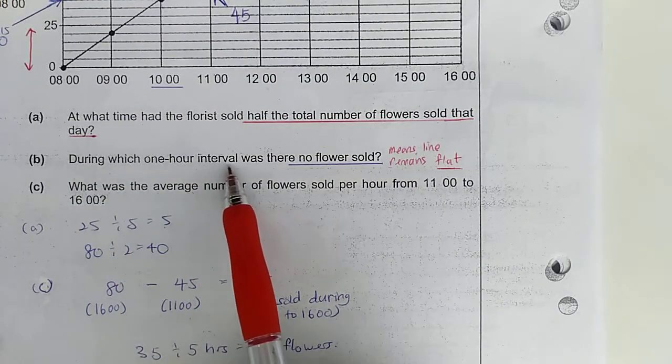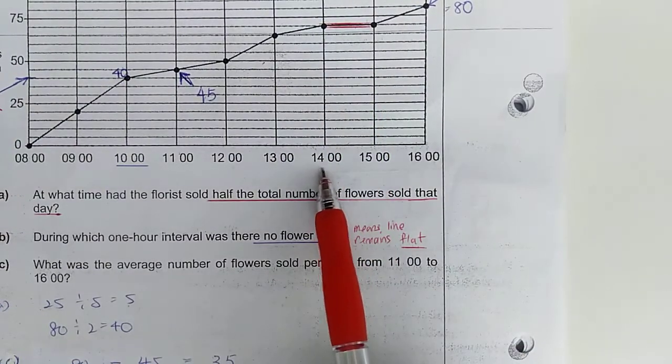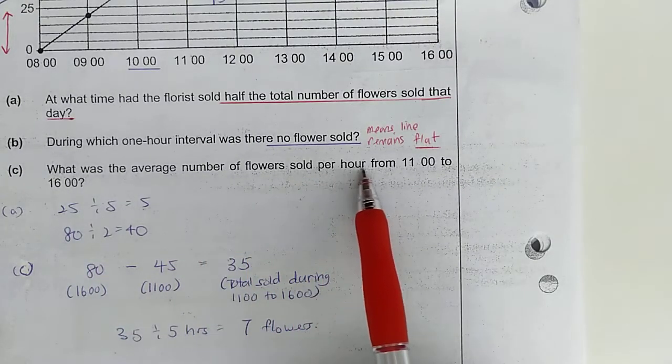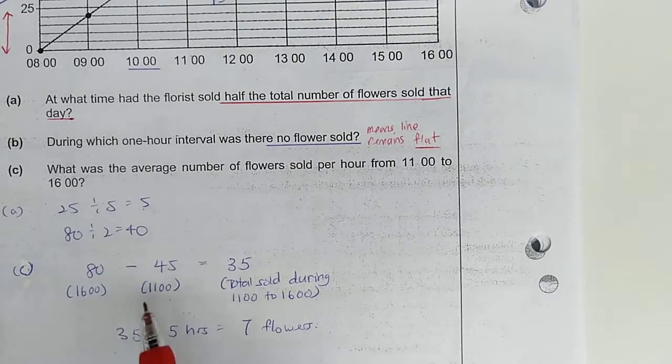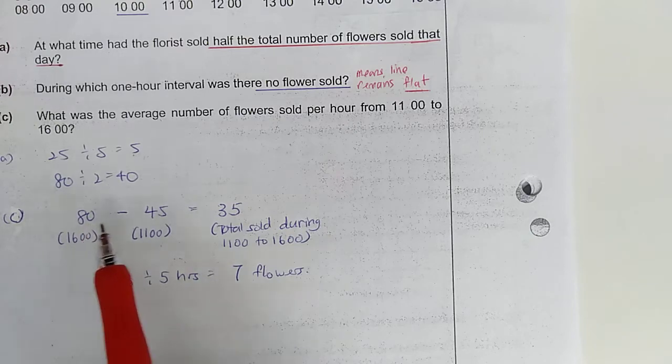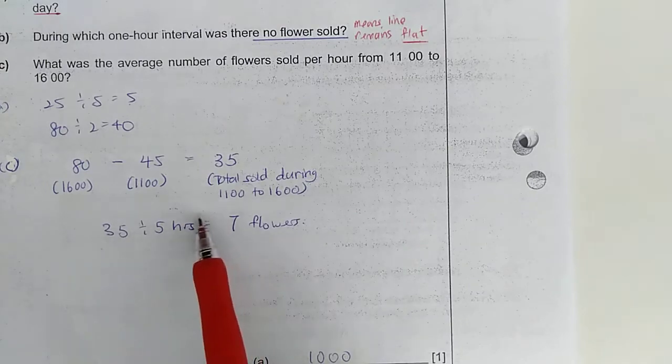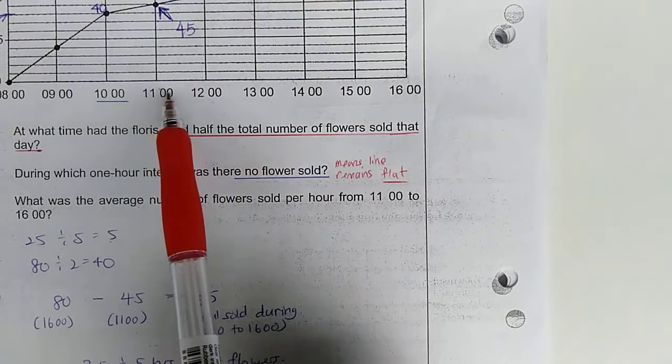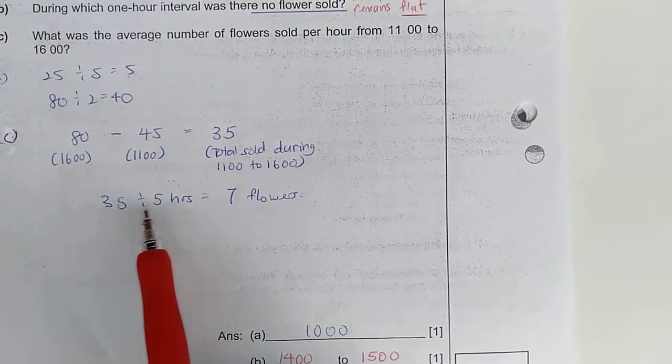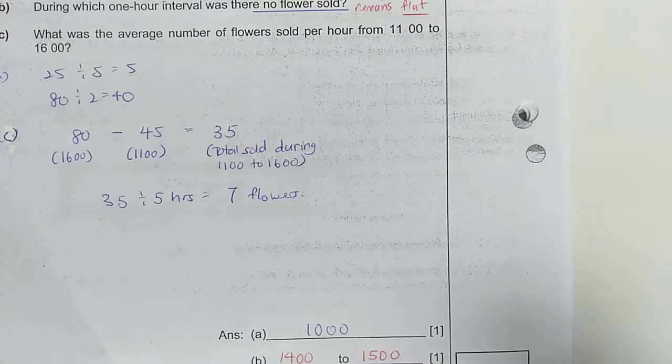Second one, during which 1 hour interval were no flowers sold. When no flower is sold, it means that the line will remain flat. This is a line that remains flat. And that's between 2 o'clock and 3 o'clock. So, 1400 hours to 1500 hours, or 2 o'clock to 3 o'clock in the afternoon. What was the average number of flowers sold per hour from 11 o'clock in the morning to 4 o'clock in the afternoon? So, first find the difference. So, at 4 o'clock in the afternoon, that's the end of the day, 80 flowers were sold. At 11 o'clock, 45 flowers were sold. So, 35 flowers were sold during this period of time. So, that period of time is actually 5 hours. So, 35 flowers over 5 hours would be 7 flowers per hour. So, that's the average number of flowers sold per hour. 7 flowers.